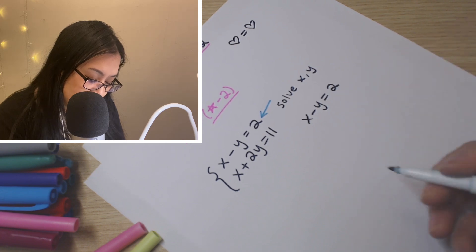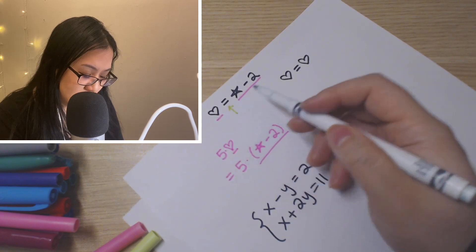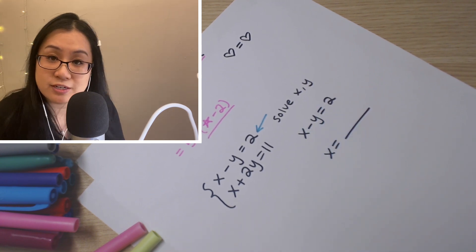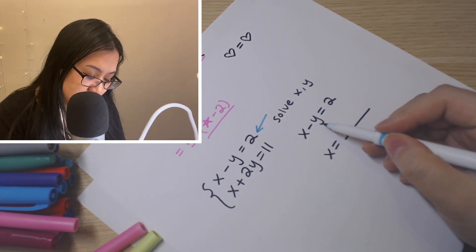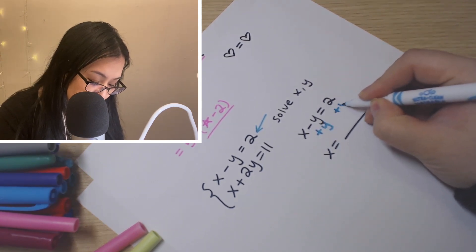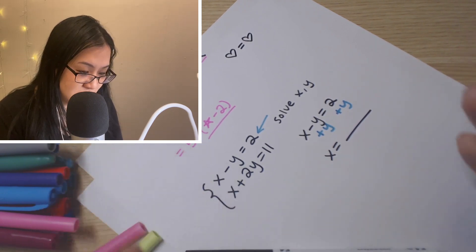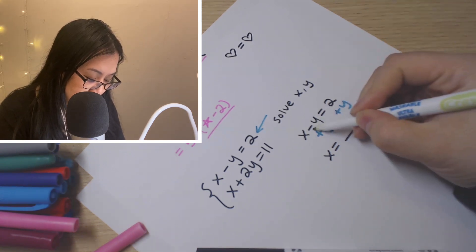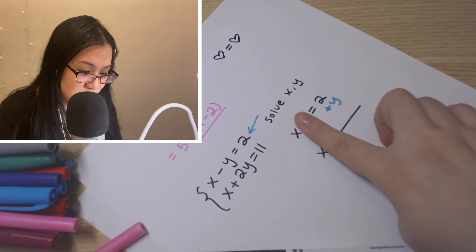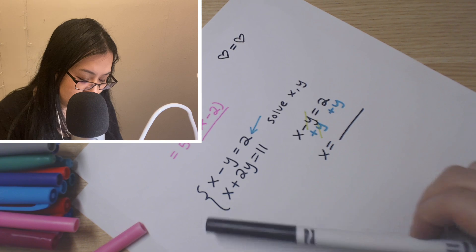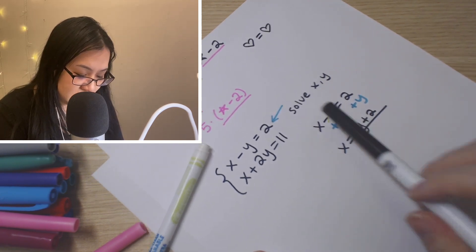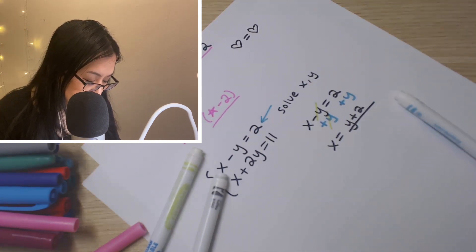So we're going to solve for X in terms of Y using that first equation. So how do we isolate this X on one side of this equal sign? We have to get rid of this negative Y. So how do I undo this negative Y? What's the opposite of minus? Plus. Exactly. And if I do that on this side, I have to do the same thing on the other side of this equal sign to keep it nice and balanced. So then these cancel. So I'm left with X equals Y plus 2. Great.